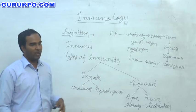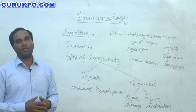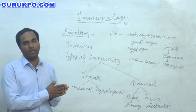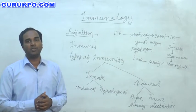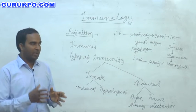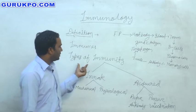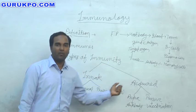When our body protects against this antigen or foreign particle, that is called our immune system. This immune system is divided into two types: innate immunity and acquired immunity.